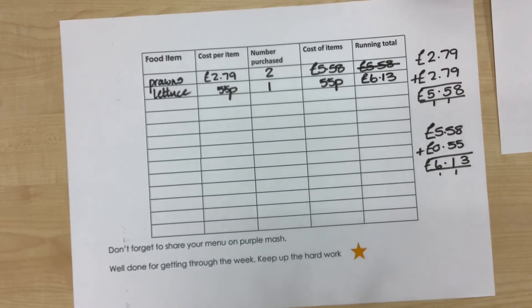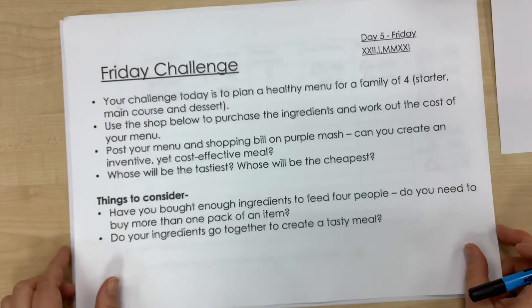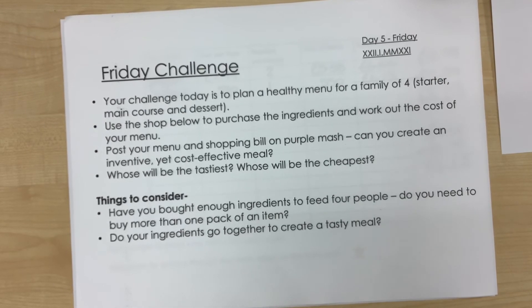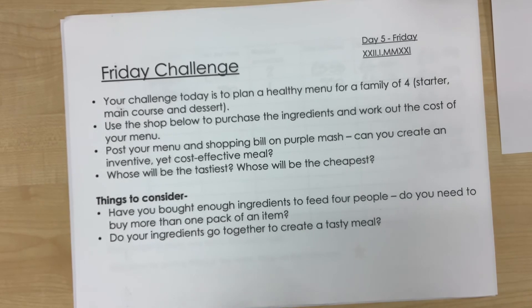Now, some things to consider. I would like you to see how inventive you can be with your meal. Who will come up with the tastiest meal? Who will manage to come up with a really nice, tasty, inventive three-course dinner for four people and have the cheapest price? You could imagine that you are on a budget and you've not got to go above a certain amount. You could do some challenges for yourself like that.